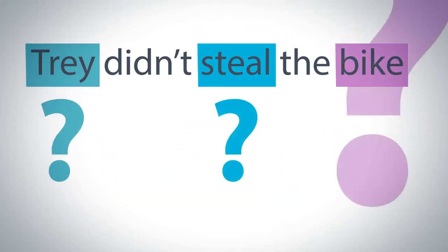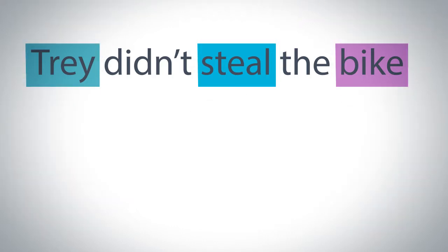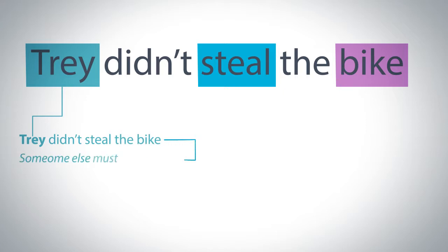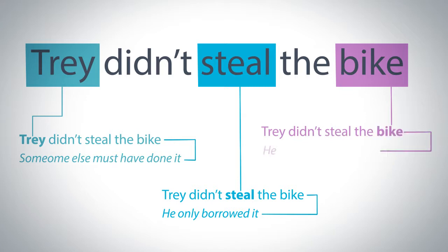However, we could change the meaning of this sentence based on which word to stress. For instance: 'TREY didn't steal the bike' — someone else must have done it. Or: 'Trey didn't STEAL the bike' — for example, he only borrowed it. Or one final example: 'Trey didn't steal THE BIKE' — so he must have stolen something else.